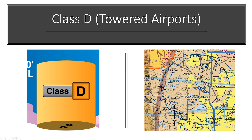The class D airspace extends from the surface up to usually 2,500 feet above the surface, and that's marked on the chart. The minus-80 notation means it goes up to, but not including, 8,000 feet — so it goes to 7,999 feet. In theory, if you could stay over class D airspace above 8,000 feet you'd be legal, but if you descend below 8,000 feet you're in class D and you're breaking the rules.